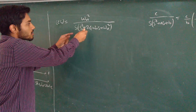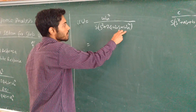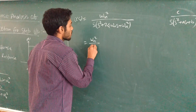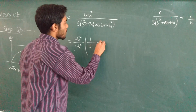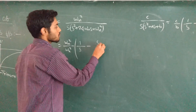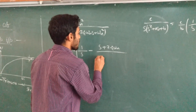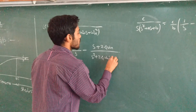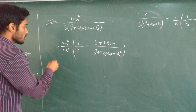We can also write the transfer function in this way. Here c and b are both ωn², so we can write ωn²/ωn² · [1/s − (s + a) / (s² + as + ωn²)], where a is nothing but 2ξωn. So: [1/s − (s + 2ξωn) / (s² + 2ξωn·s + ωn²)]. The ωn² terms cancel.